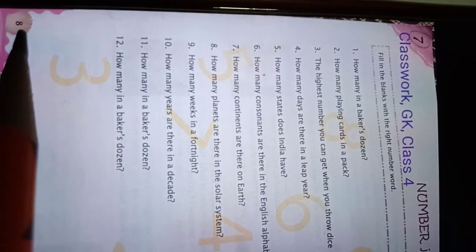Hello everyone, today's date is 6th of July 2021. Our class is Class 4 GK classwork page number 8, chapter 7. So today we do this fill in the blanks with the correct number of words, number jumble.